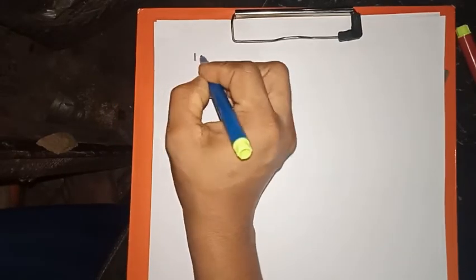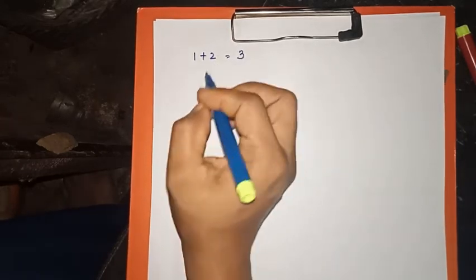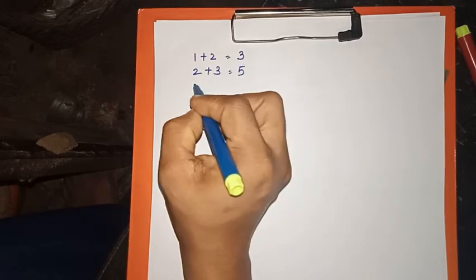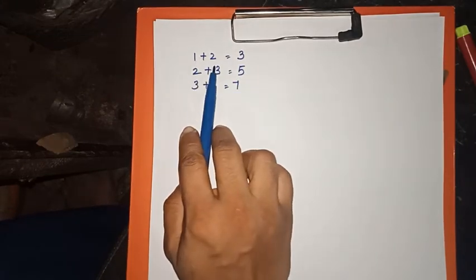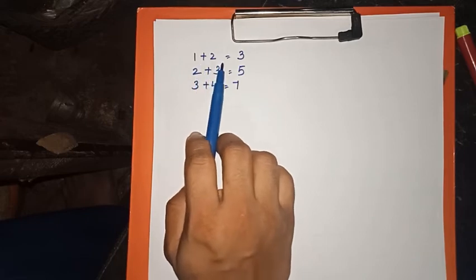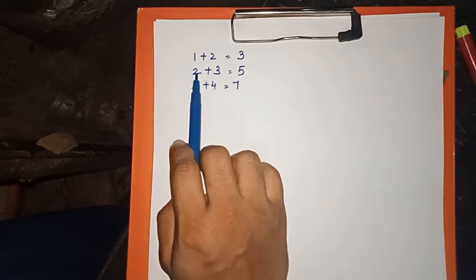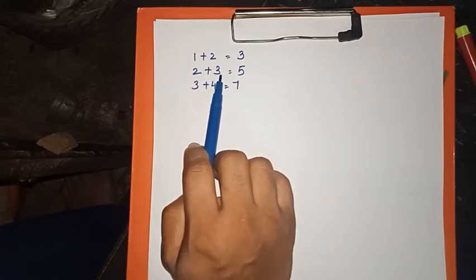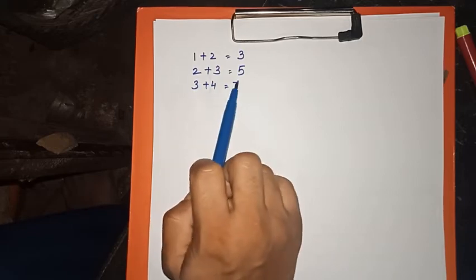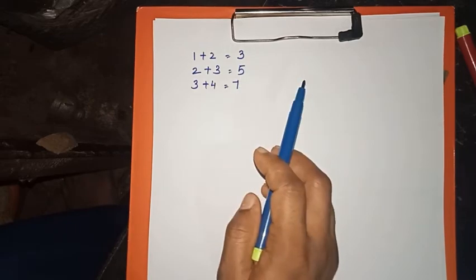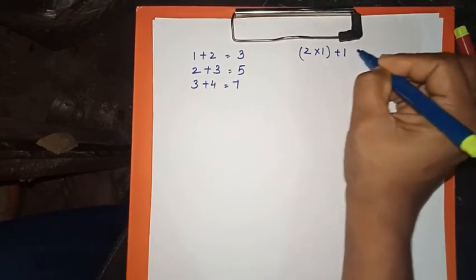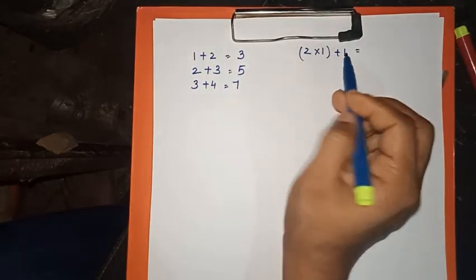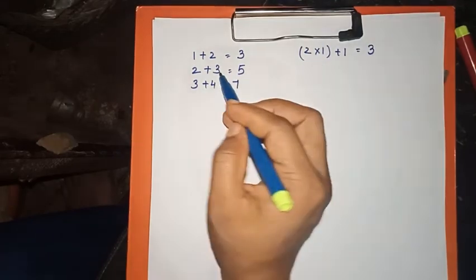Now we look at consecutive natural numbers. 1 plus 2 is equal to 3, 2 plus 3 is equal to 5, 3 plus 4 is equal to 7. For 2 consecutive natural numbers, we write a short form: the sum of two consecutive numbers follows a pattern.